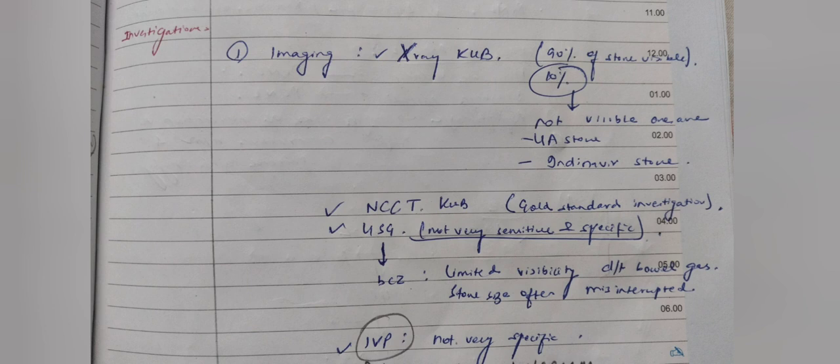Now let us come to investigations. You do imaging—x-ray of the KUB region. KUB: kidney, ureter, urinary bladder. 90% of the stones are visible in the x-ray, 10% are not—these are the indinavir and the uric acid stones. The gold standard is the non-contrast CT scan of the KUB region. You can also do USG, which is not very sensitive and specific. You can also do IVP.